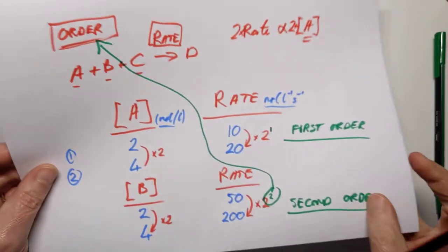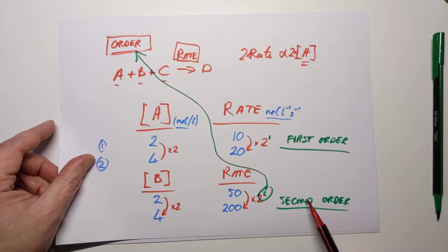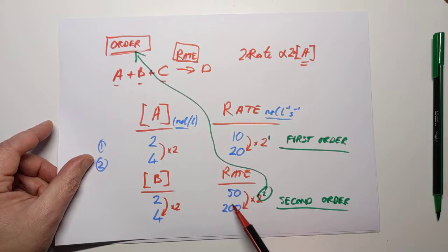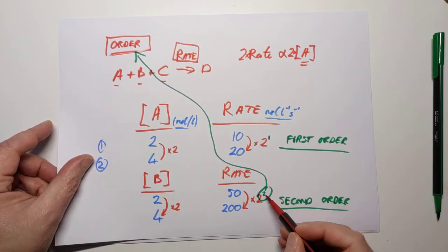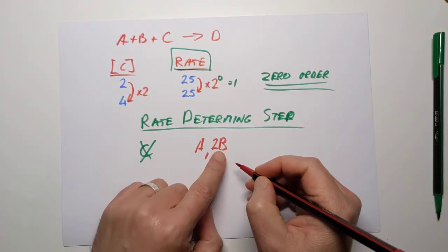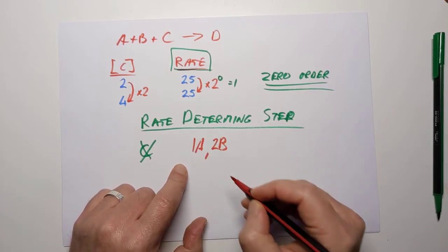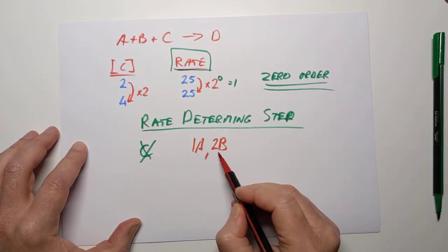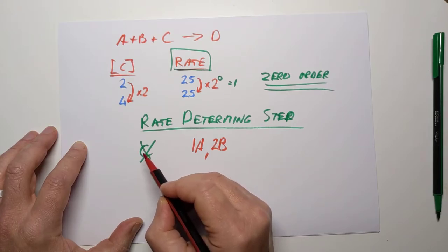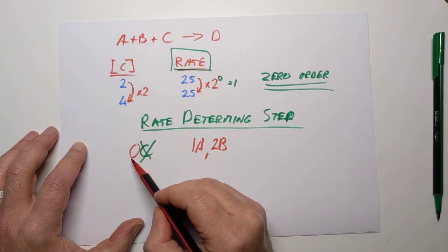The reaction was first order with respect to A and second order with respect to B. Second order means there are probably two B molecules involved, and that's why it's second order with respect to B — there is probably only one A molecule and two molecules of B. That's why B has a larger effect on the rate. And, of course, zero molecules of C — C is involved in the reaction, but not in the slowest step.